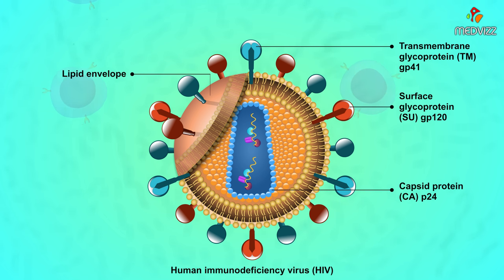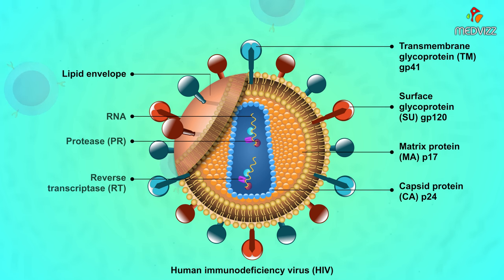The core is composed of P24 capsid protein and the P17 matrix protein helps maintain viral structure. Inside the core are two identical copies of single-stranded RNA viral genome and three enzymes: reverse transcriptase (RT), protease (PR), and integrase (IN).